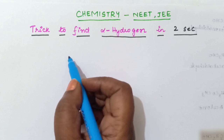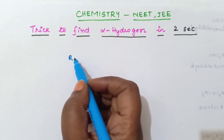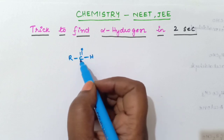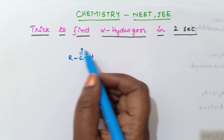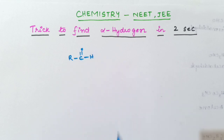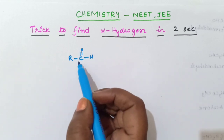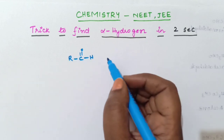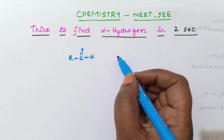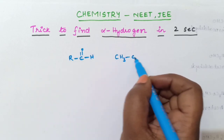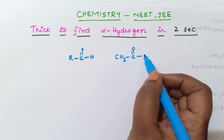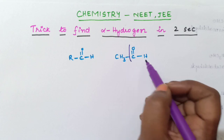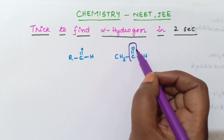Suppose we take an aldehyde molecule R-CHO. You know that CHO is the aldehyde functional group. For the R group I will take methyl, so R is CH3. So the molecule is CH3-CHO. This is the functional group — the aldehyde group. And this is the carbonyl carbon.